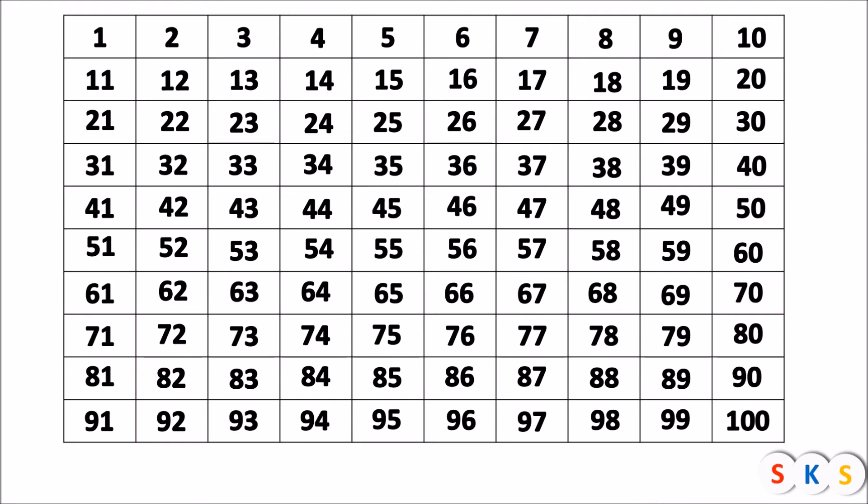Now here we have a table which contains numbers from 1 to 100. Now we are going to find out all prime numbers from 1 to 100. Here we have the first number, 1. The number 1 is neither prime nor composite because 1 has exactly one factor, that is 1 itself. A prime number must have exactly two factors. Therefore 1 is neither prime nor composite.